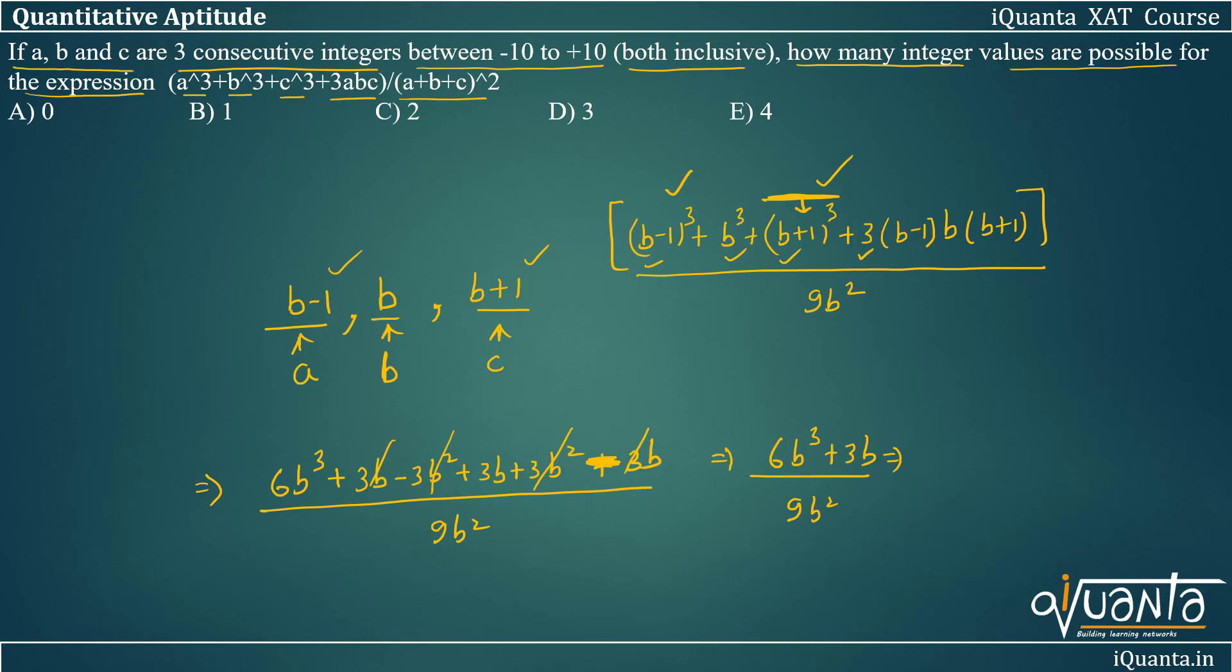We can still cancel numerator, denominator by 3 and a B. So we'll be left with (2B² + 1) / 3B over here.